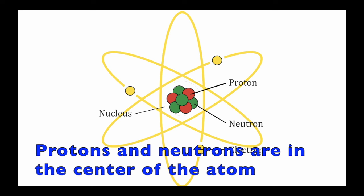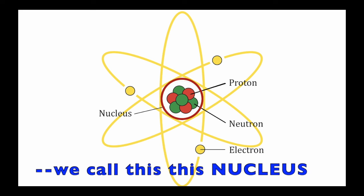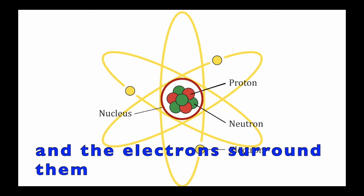Protons and neutrons are in the center of the atom, we call this the nucleus, and the electrons surround them.